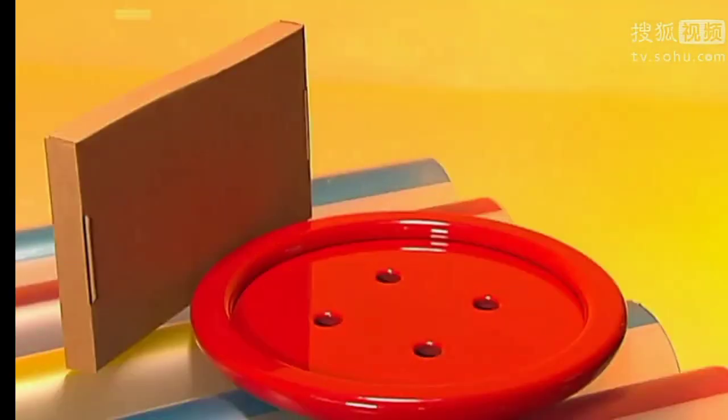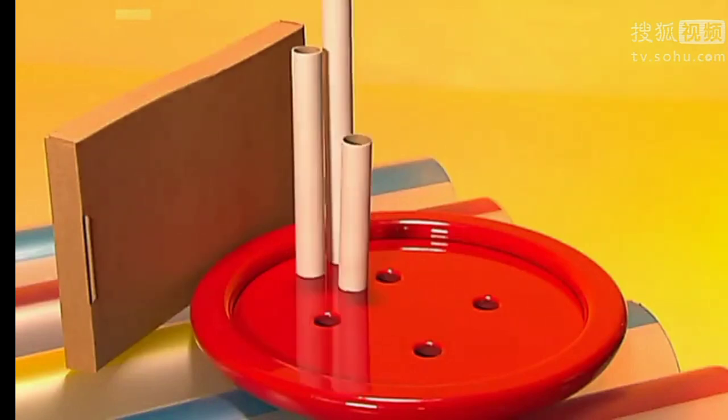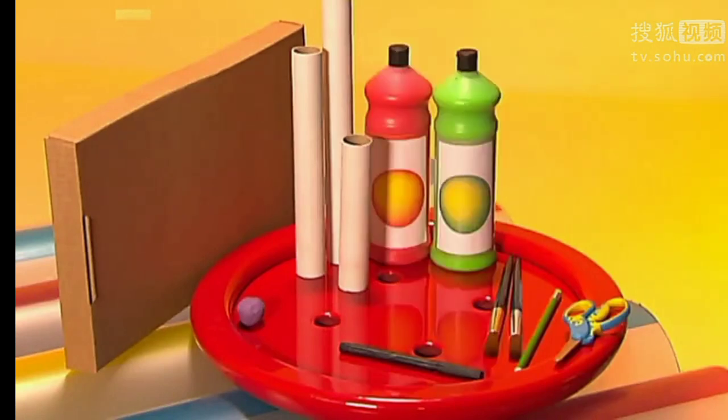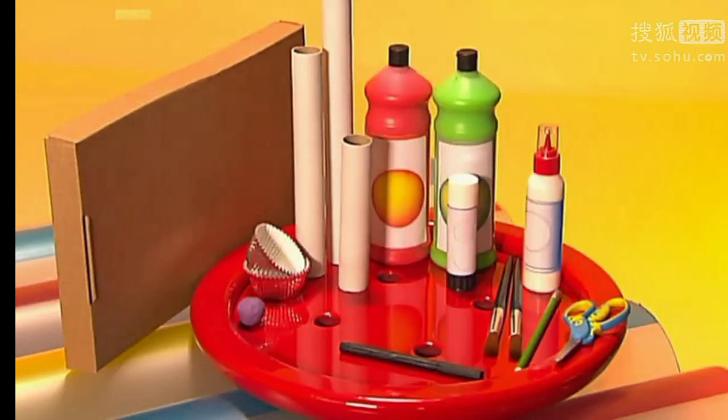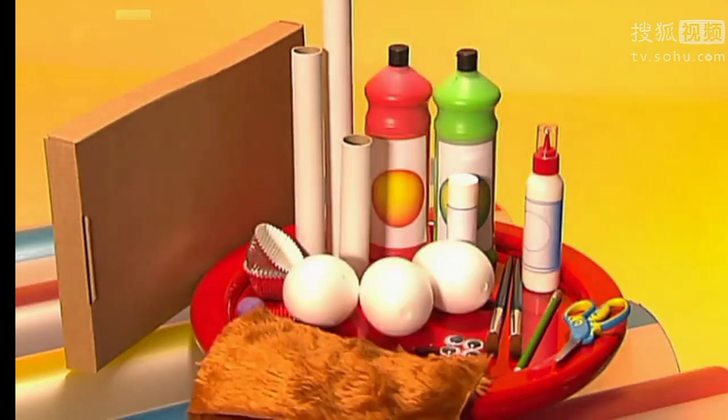To make it, you will need a cardboard lid, some cardboard tubes, a pen and a pencil, a ball of modelling clay, scissors, paint and brushes, cake cases, glue, googly eyes, a piece of fun fur, and polystyrene eggs which you can get from an art and craft shop.